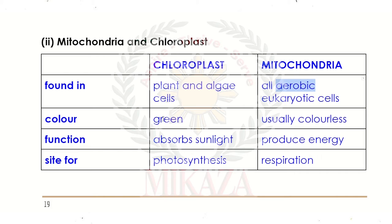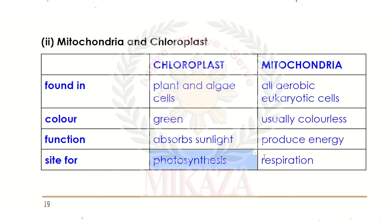Chloroplasts are green in color while mitochondria are colorless. The main function of chloroplasts is related to light — they carry out photosynthesis. Mitochondria produce energy, which is why mitochondria is known as the powerhouse of the cell. So chloroplasts perform photosynthesis while mitochondria perform respiration.